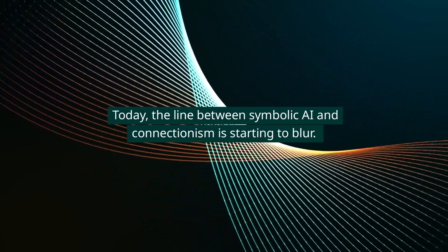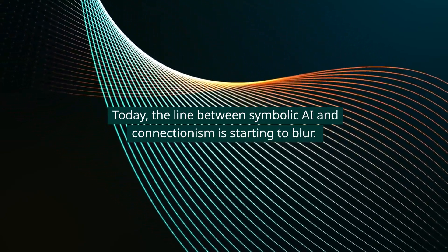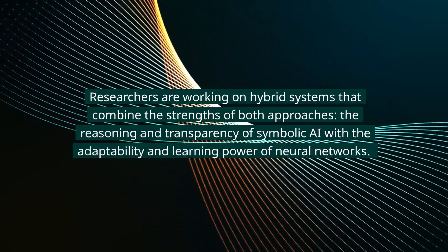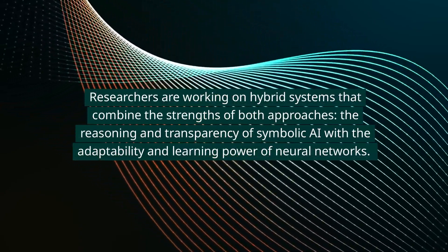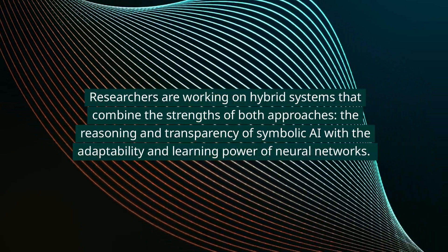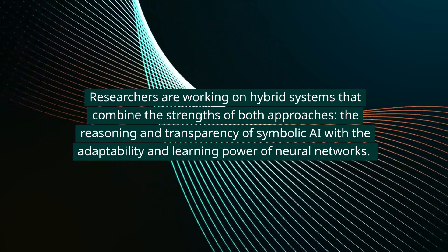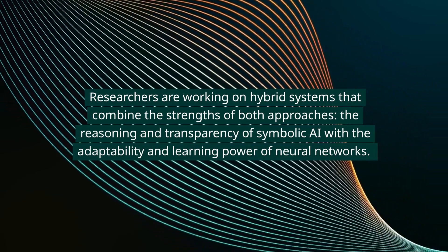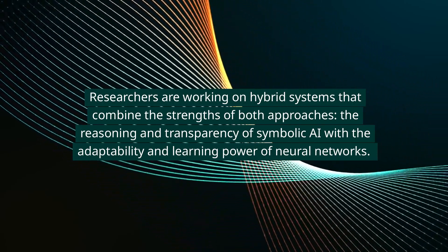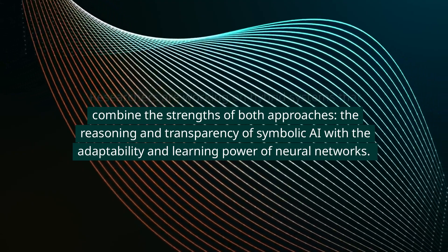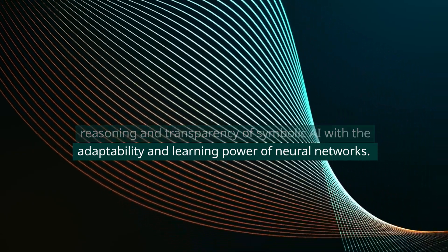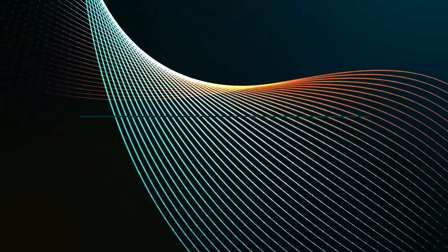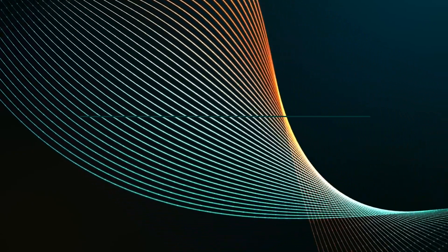Today, the line between symbolic AI and connectionism is starting to blur. Researchers are working on hybrid systems that combine the strengths of both approaches — the reasoning and transparency of symbolic AI with the adaptability and learning power of neural networks. It's not just a rivalry anymore. It's a collaboration.